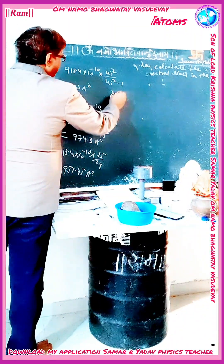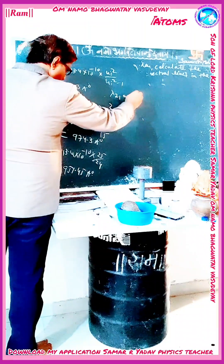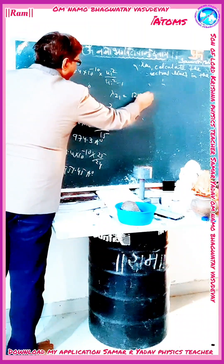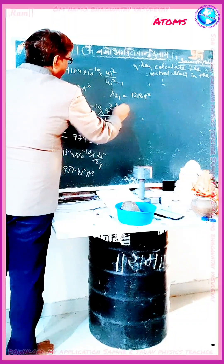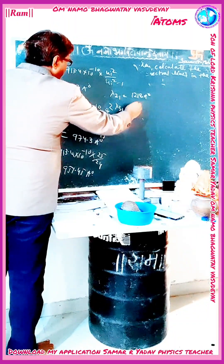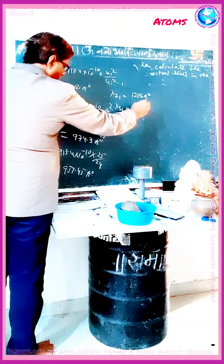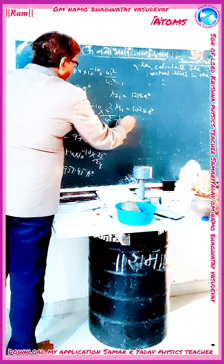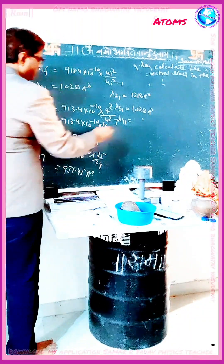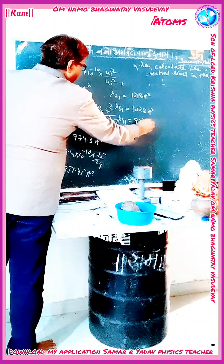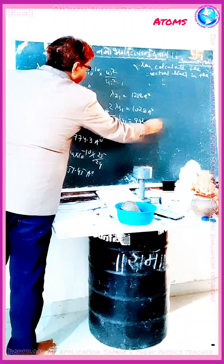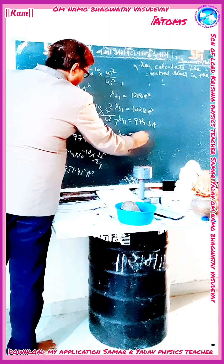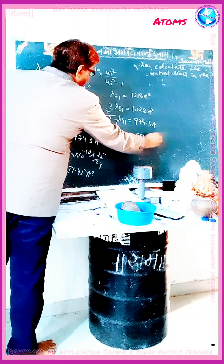So the four Lyman series spectral lines are: λ₂₁ equals 1218 Angstroms, λ₃₁ equals 1028 Angstroms, λ₄₁ equals 974.3 Angstroms, and λ₅₁ equals 951.45 Angstroms.